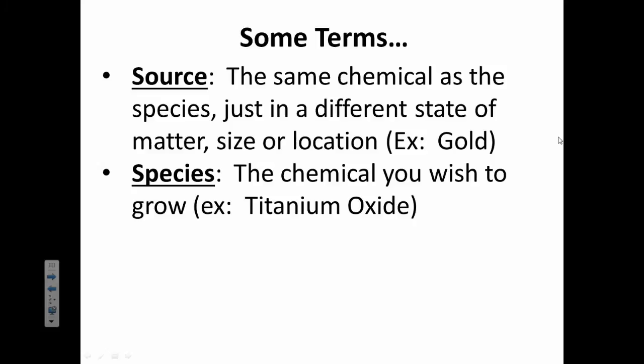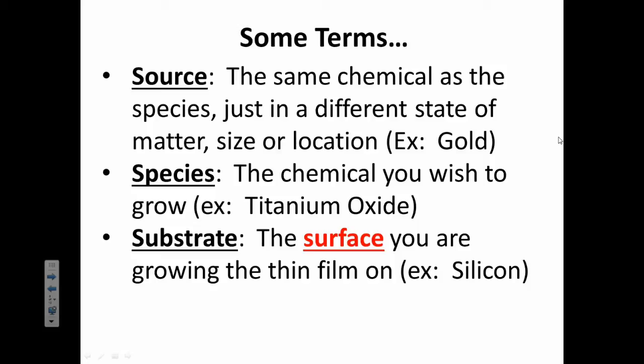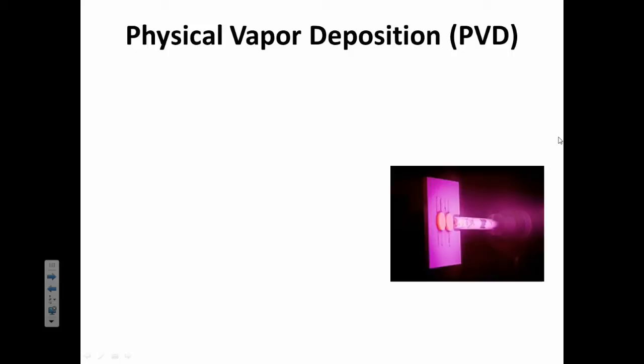Some other terms that are really helpful when we're talking about making these thin films are source, species, and substrate. So source is basically where you're trying to get your thin layer from. For example, if you're trying to put a thin layer of gold on something, your source would be a big block of gold. Species is the chemical that you're actually trying to grow. And substrate is the surface that you're trying to grow it on. Silicon would be an example of a substrate.